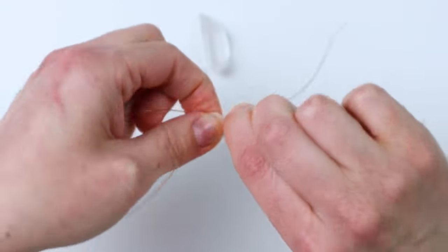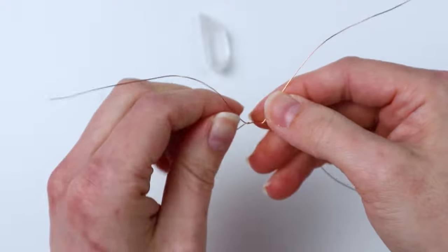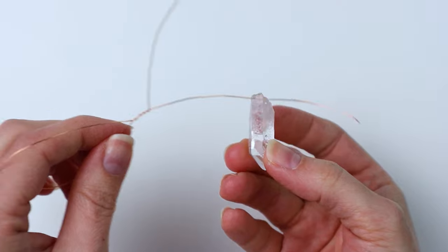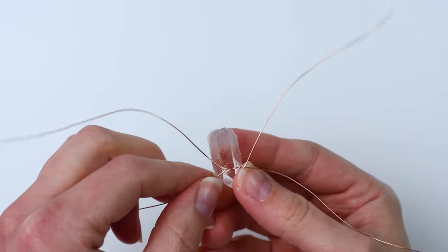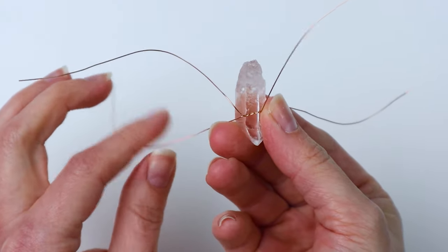And it'll depend on how wide across your crystal is, how much you want to twist it. You just want this to sit nicely on the front of your crystal. I'll show you what I mean. So figure out how you're going to want it to sit and this is just going to go right on the front like that.